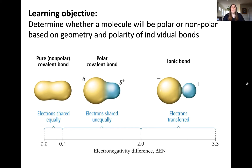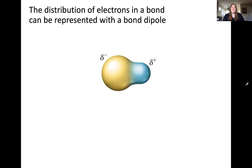In a polar covalent bond it's important to remember that electrons are shared, but they're shared unequally because one atom has a higher electronegativity than the other. For this type of polar covalent bond it's possible to represent the distribution of electrons using something called a bond dipole.